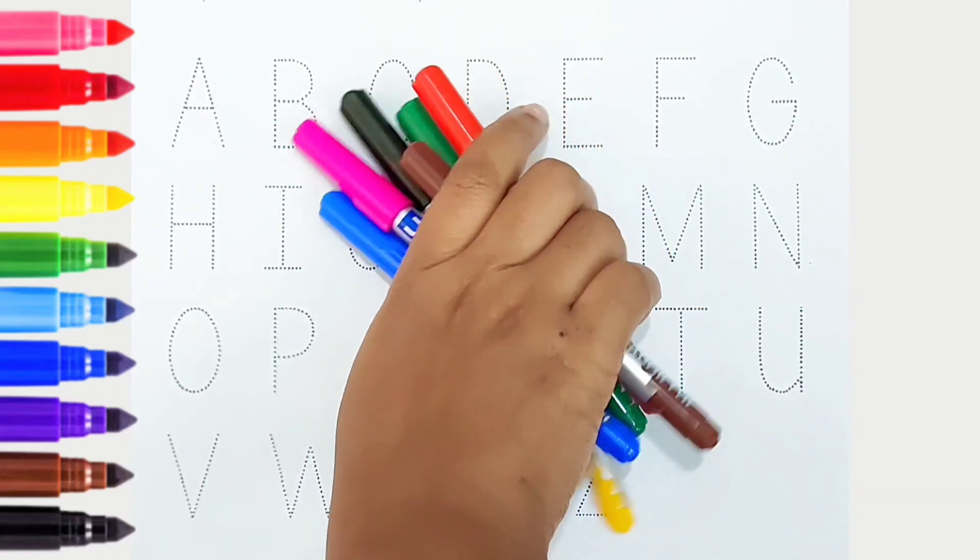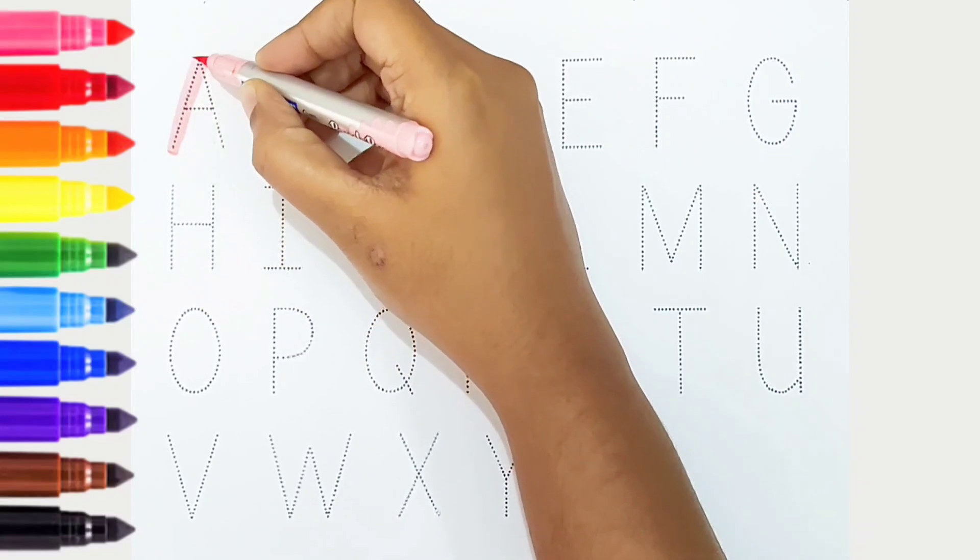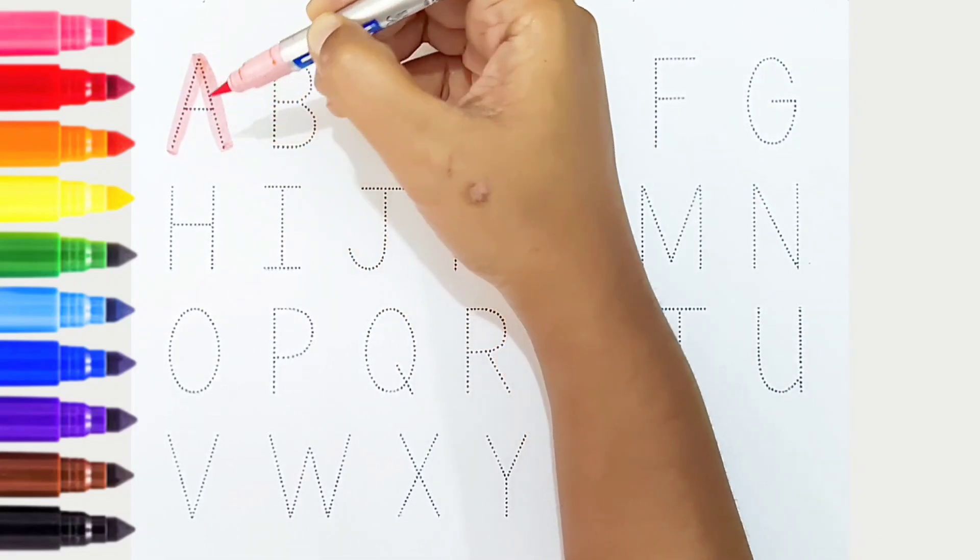Hi kids, today we can learn the alphabets from A to Z. Let's begin. A, light pink color, is for apple.